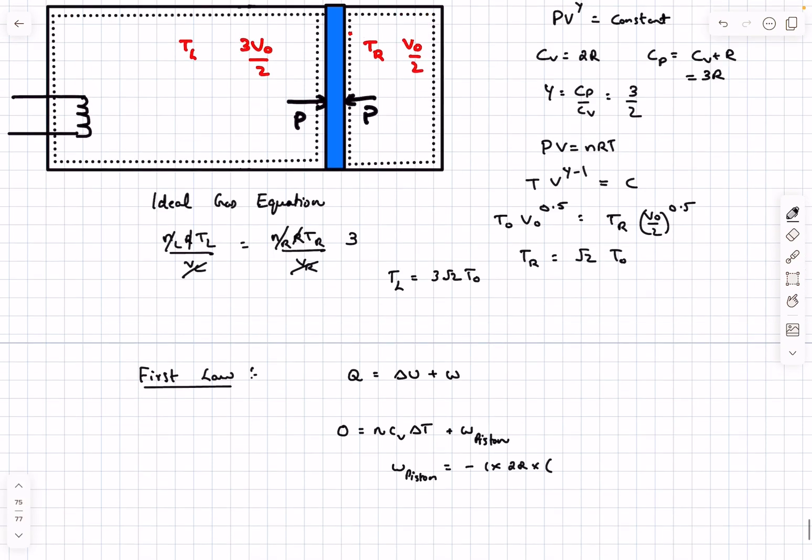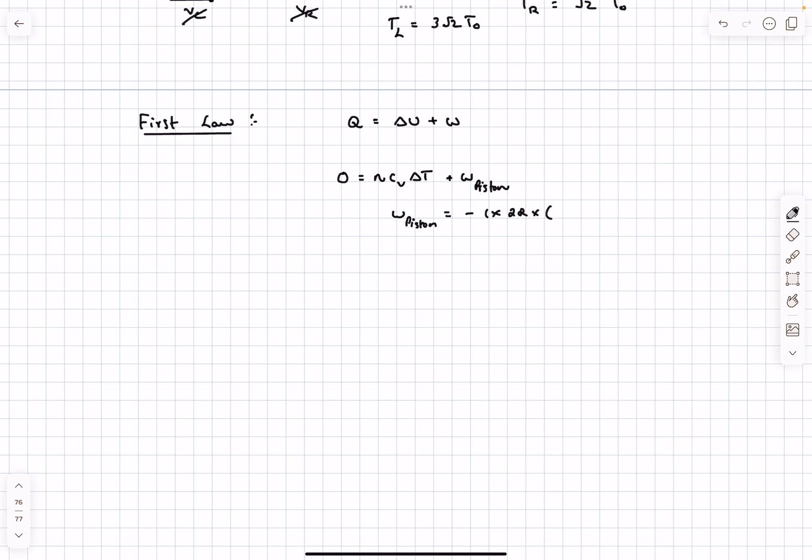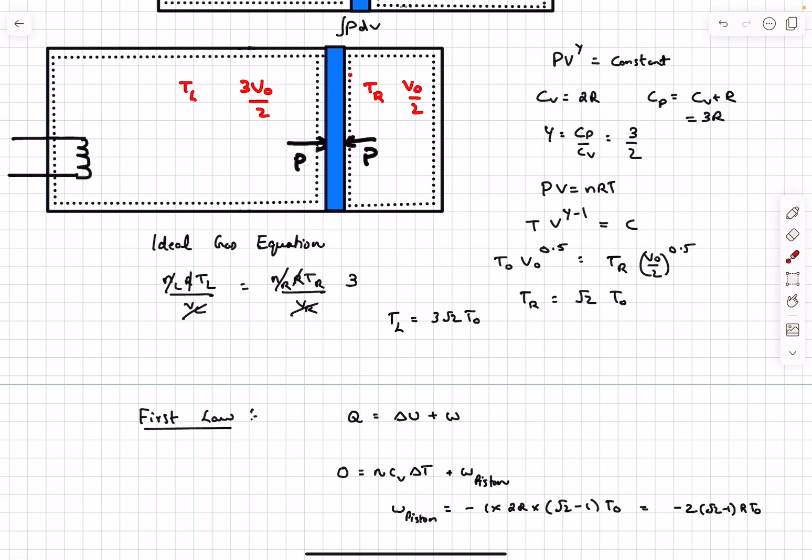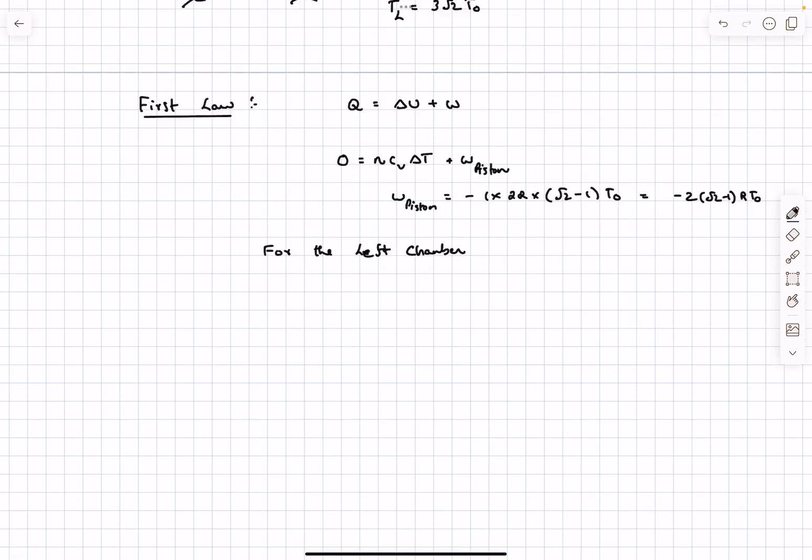As we can see, work is being done by the piston on the right system. For the left chamber, work done on the boundary layer is -Wpiston = 2(√2 - 1)RT0. For the left chamber, as work is being done by the system, we have a positive sign.